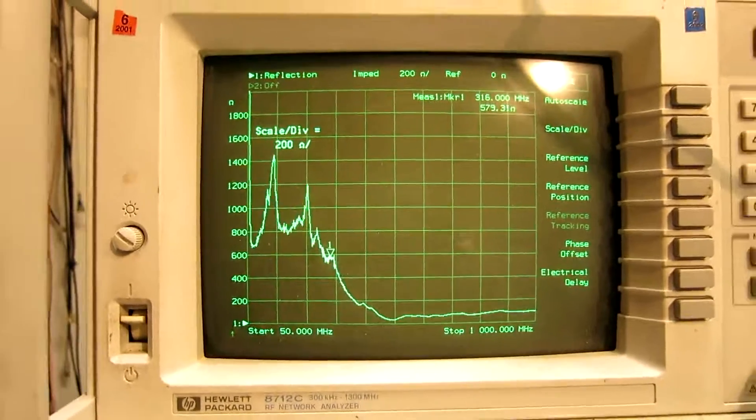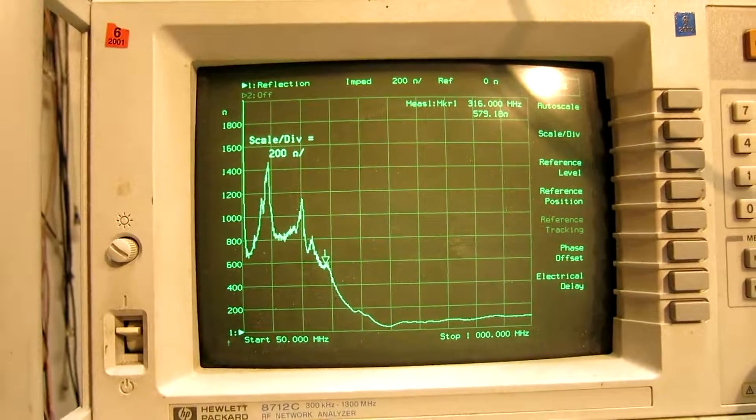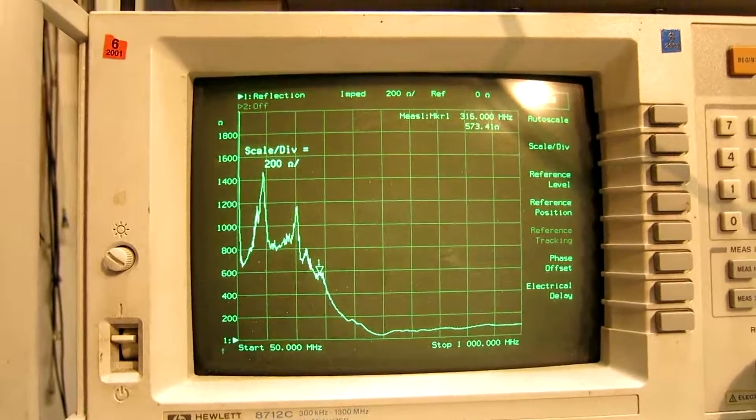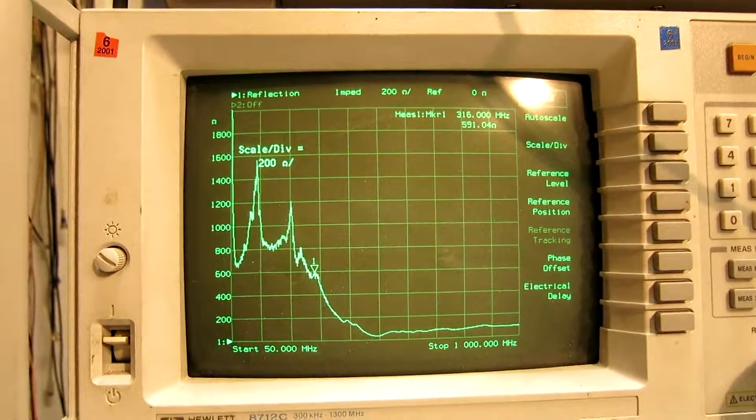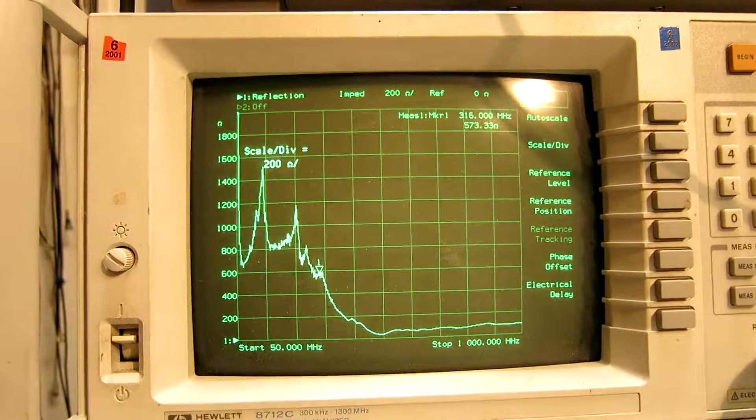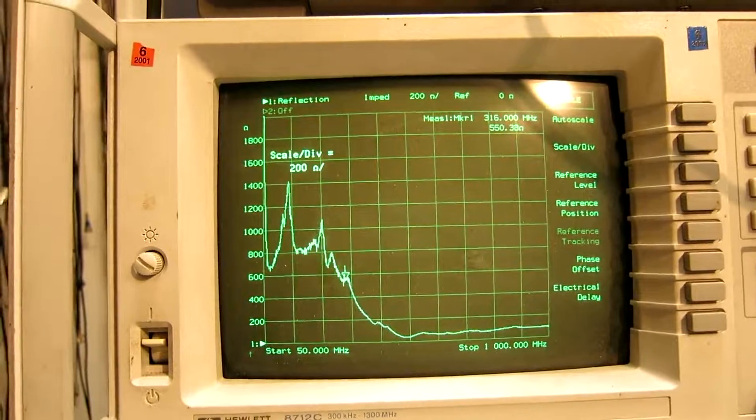And when I change the scale on the network analyzer, you can see that the impedance is in the 800 ohm range at 100 megahertz. Maybe it's one kilo ohm.